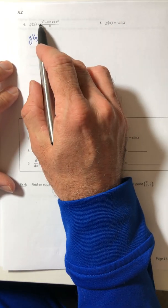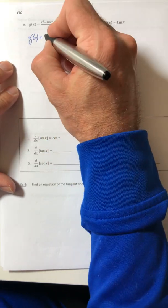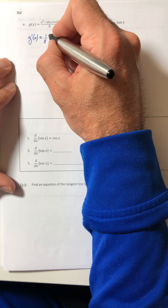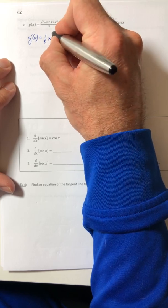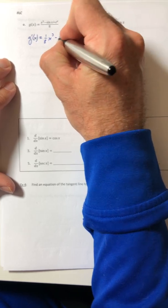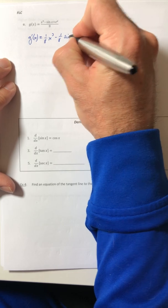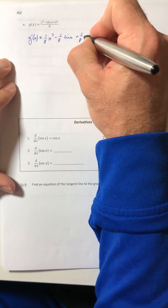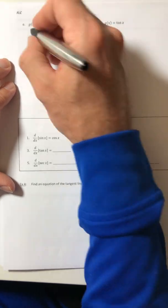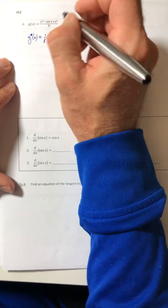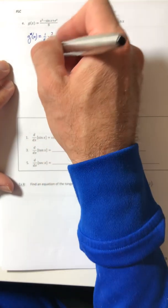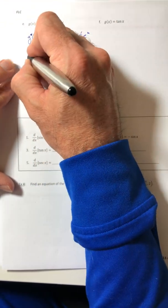So there are a couple ways you can think about it if you have that constant in the denominator. One of them is you can just break it up. It's like one eighth x to the third minus one eighth cosine of x plus one eighth e to the x. Oops, that's not g prime, that's g. So you can break them up into multiple terms if you need to and do the derivative of that.